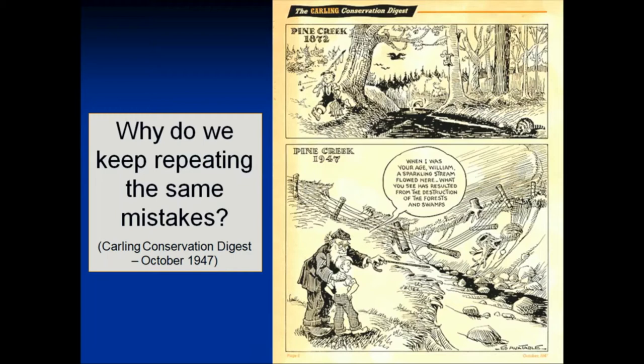That was 1947. They already had the correlation that if we don't manage the landscape properly, we change the water budget, and when we change the water budget, everything changes in the landscape. How can we keep forgetting this? It's a mystery of humanity that we have a tendency to rediscover things. Those who don't learn from history are doomed to repeat it, and I don't want you to have to repeat the mistakes our forefathers made.